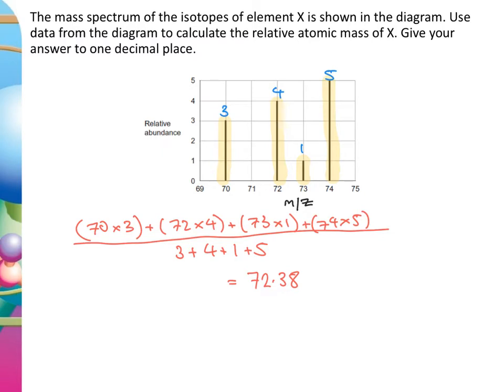Something a lot of people miss when answering these questions is forgetting a key instruction. The question said to give your answer to one decimal place, so we need to do that. Our answer to one decimal place is 72.4.